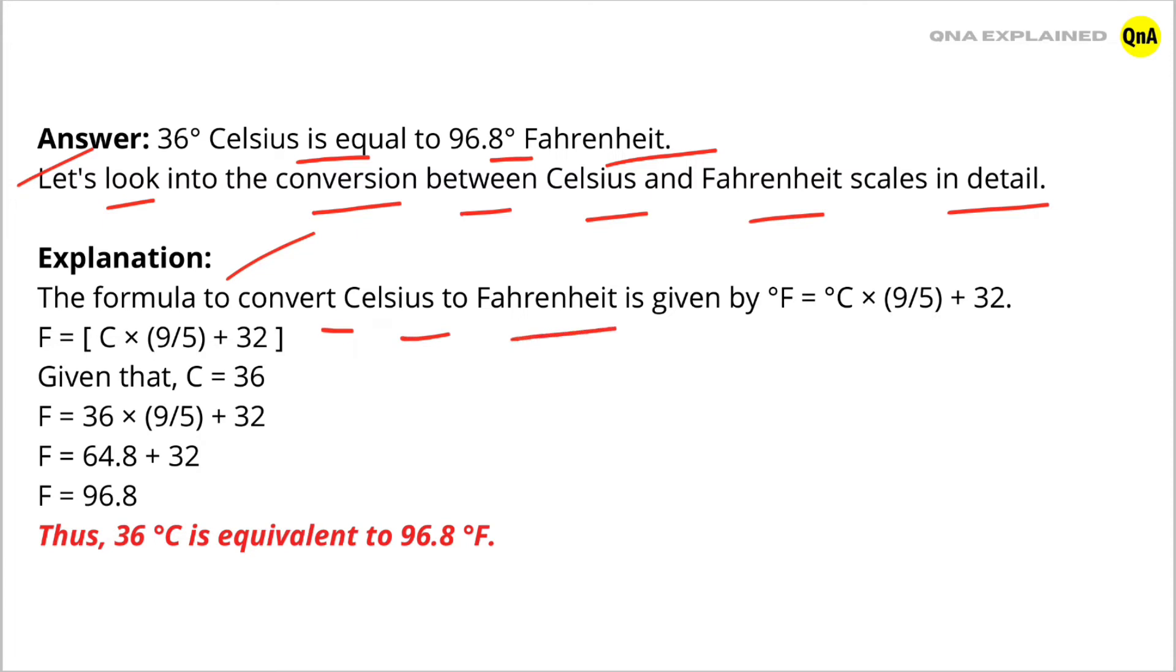The formula to convert Celsius to Fahrenheit is given by F = C × (9/5) + 32. Given that C = 36, put the value of Celsius in this formula.